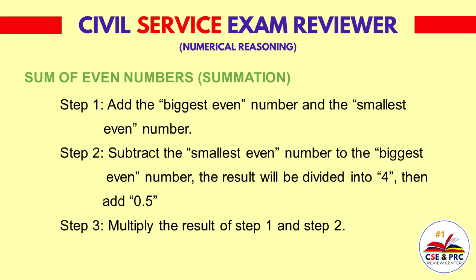Step 2: Subtract the smallest even number from the biggest even number. The result will be divided by 4, then add 0.5. Step 3: Multiply the result of Step 1 and Step 2.